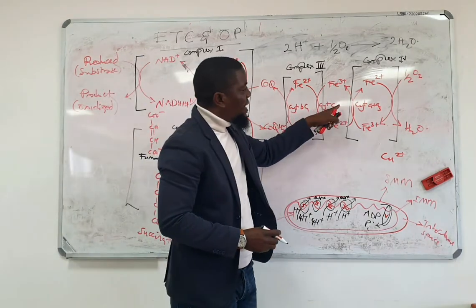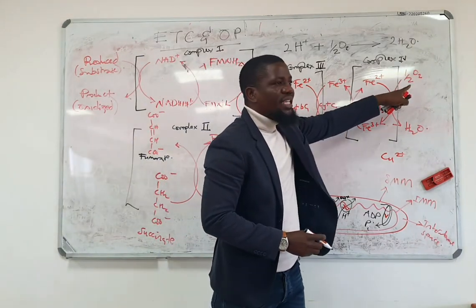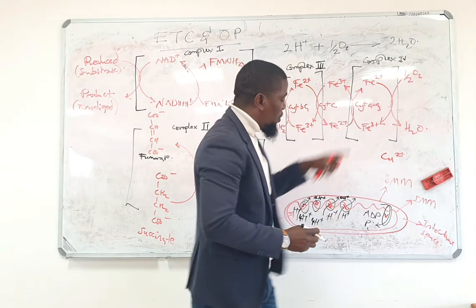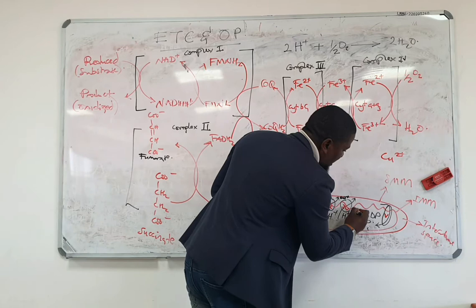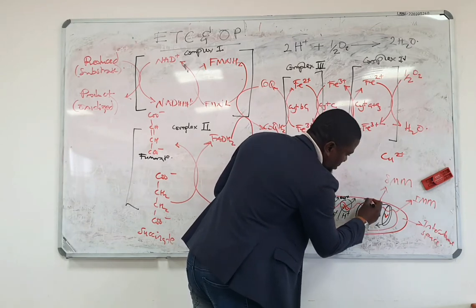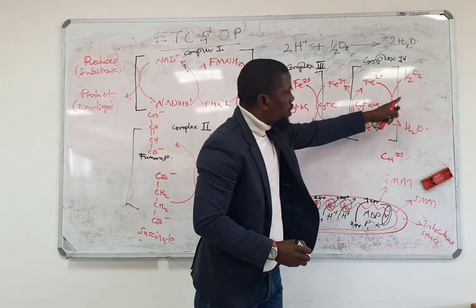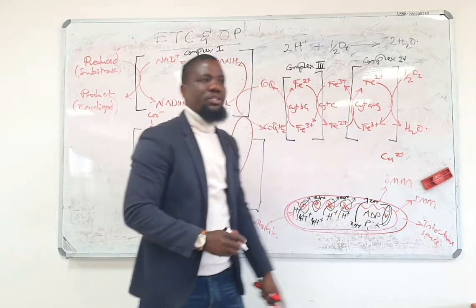Finally, as they pass through coenzyme cytochrome oxidase, which is complex four, you will see two other protons moving from the matrix through complex four into the intermembrane space.